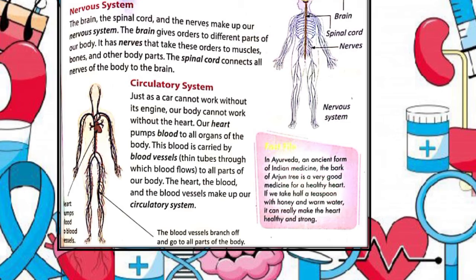Blood helps oxygen get around your body. When you exercise, you can feel your pulse, which tells you how fast your heart is pumping. The body's circulatory system is responsible for transporting material throughout the entire body — it delivers nutrition, water and oxygen to billions of body cells and carries away waste such as carbon dioxide that body cells produce.